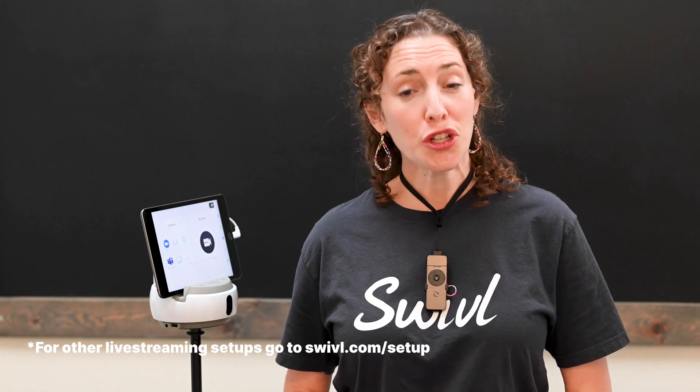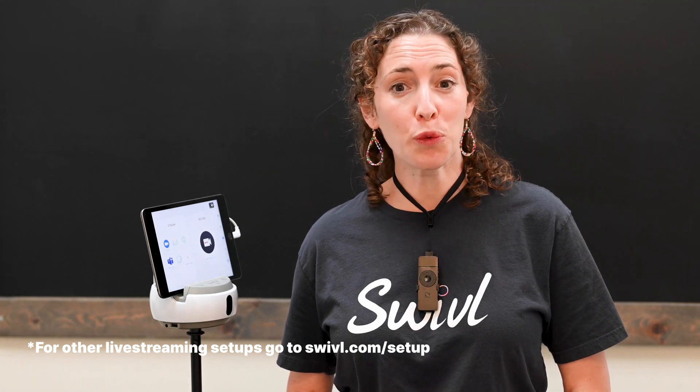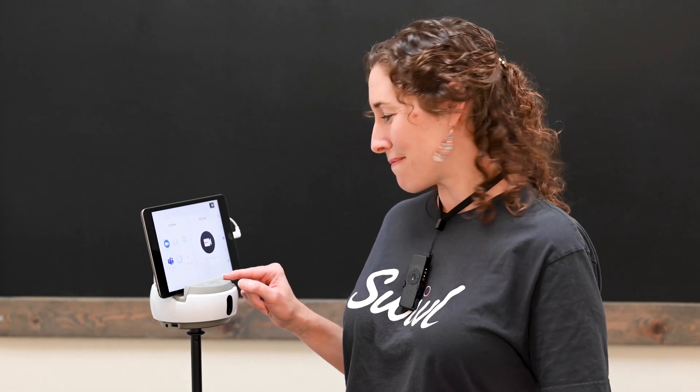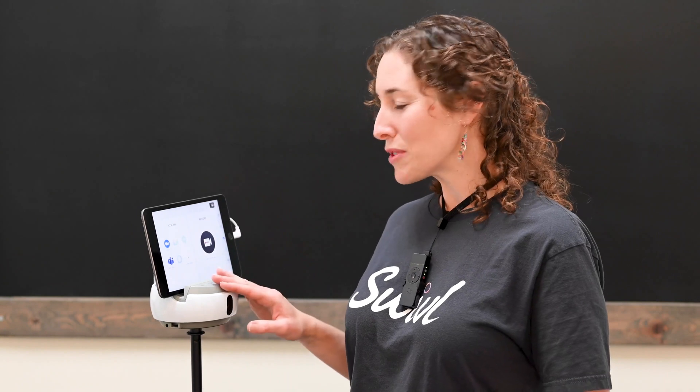I'm going to show you how to set up traditional audio for live streaming with your Swivel robot. With traditional audio, only the teacher will be able to hear remote participants through a set of wired earbuds. Before you begin, make sure that you have two solid green lights showing on the top of your robot. That means you're successfully connected and ready to begin.